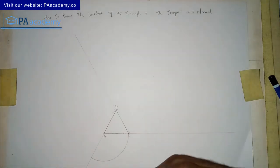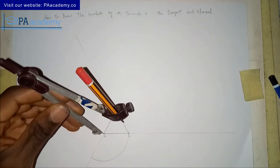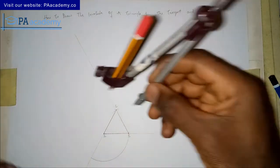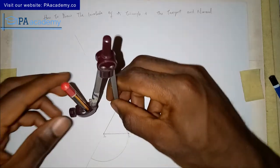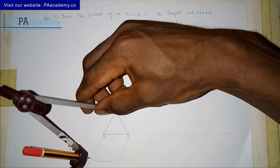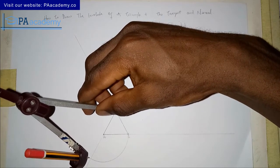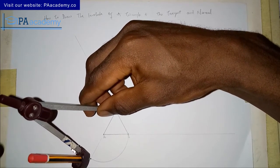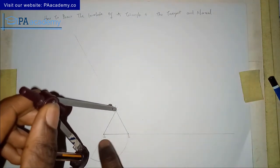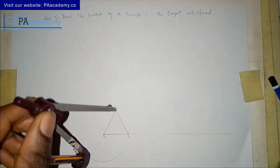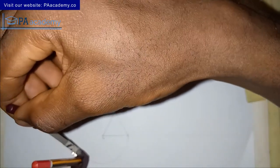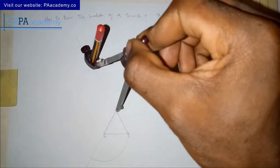Starting from point A, we draw the first arc of three centimeters. Then we come to point C. From point C, you measure three times two — that's the length of AB multiplied by two, which is six centimeters. So if you are working with a different side length, say four centimeters, then yours will be eight. You do the same thing from this point.